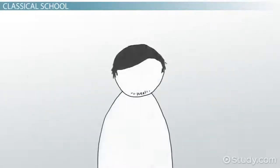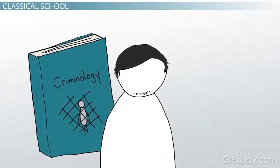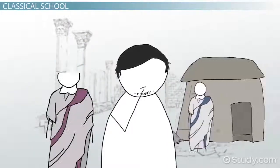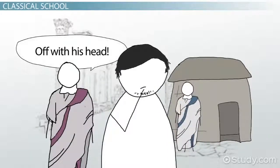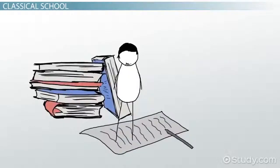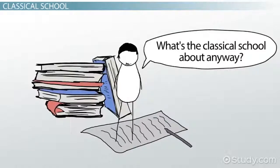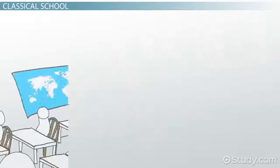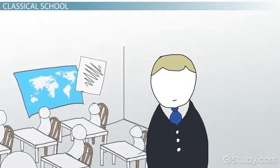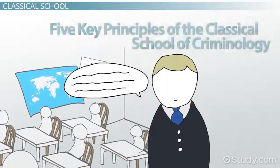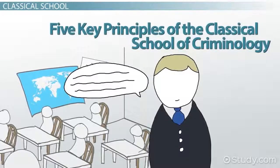Jordan is interested in criminology, and he's heard that things before the Enlightenment were pretty bad for criminals and people suspected of being criminals, but he's still not quite sure what the Classical School of Criminology is about. To understand the Classical School, Jordan's teacher tells him to remember the five key principles of the Classical School of Criminology.